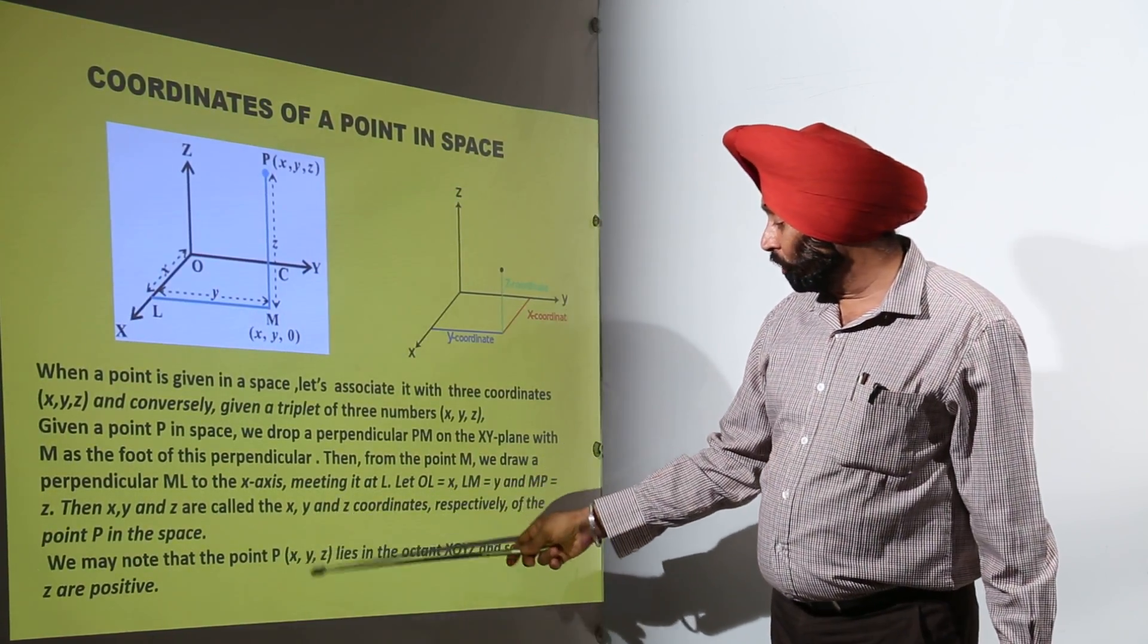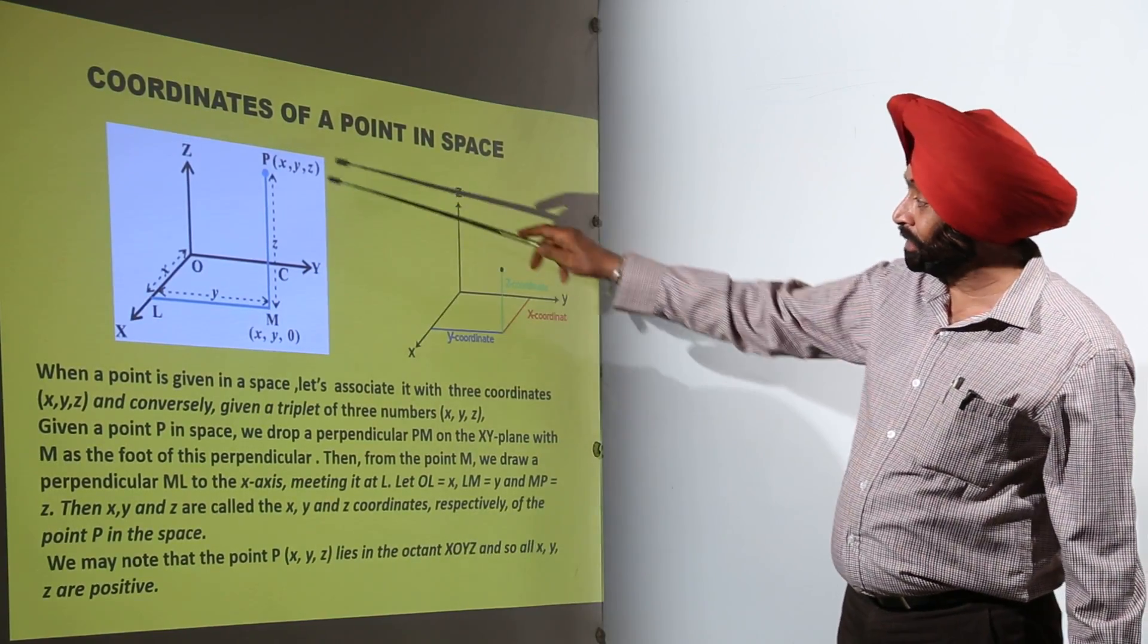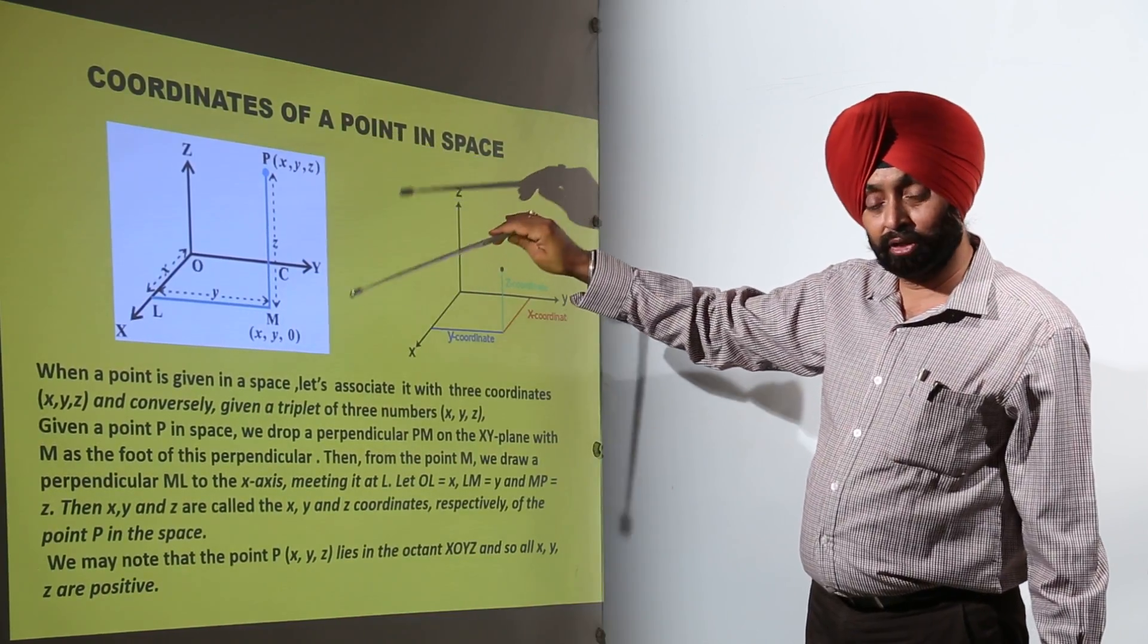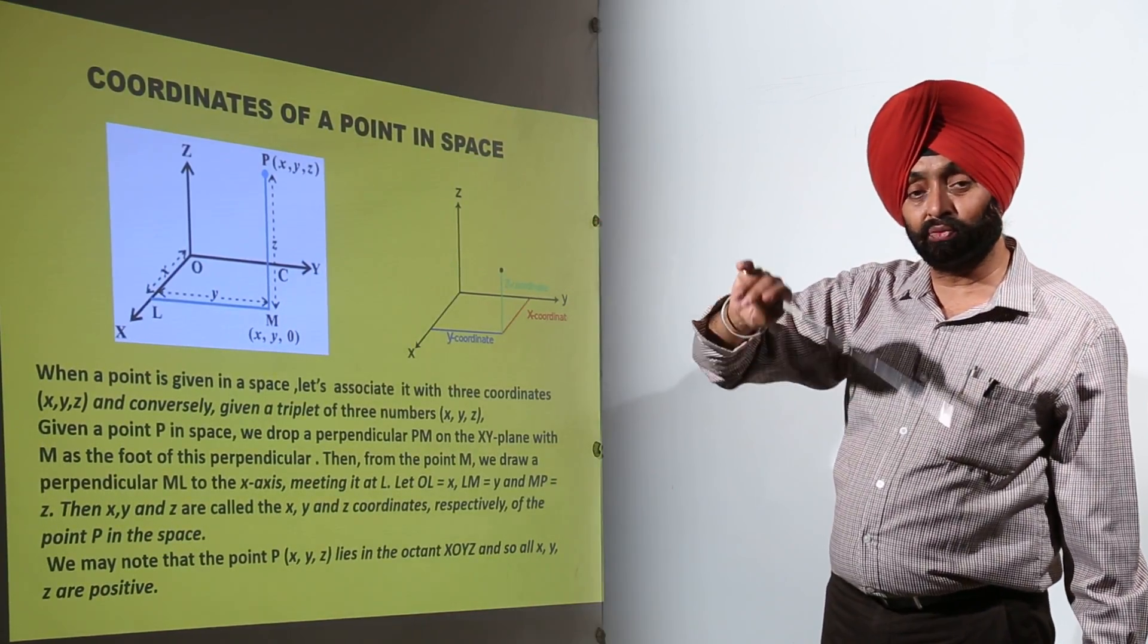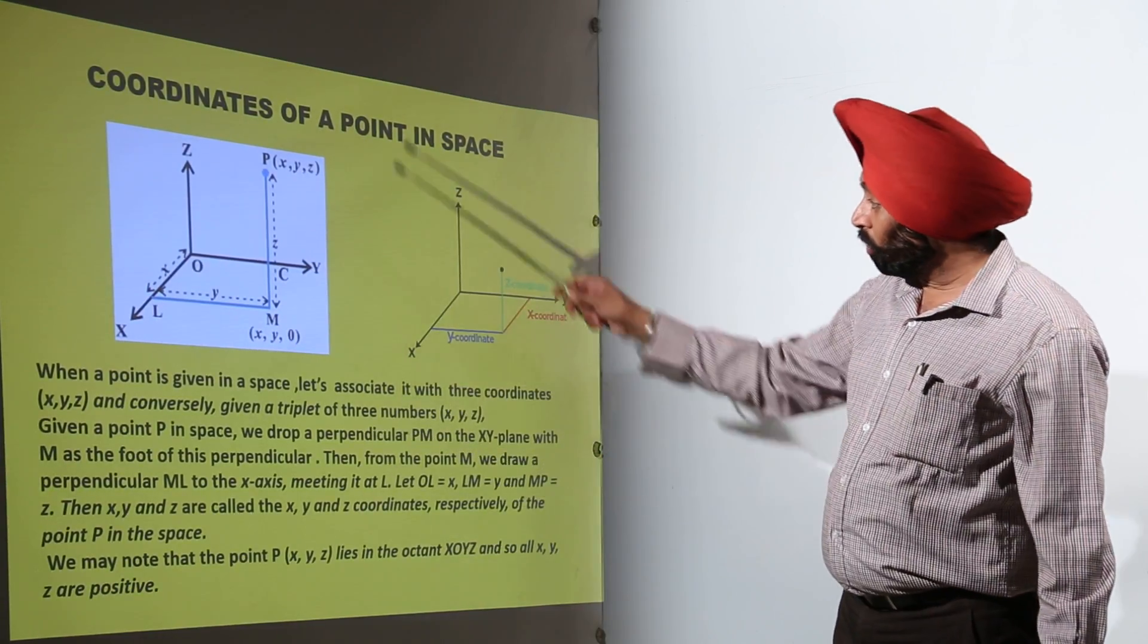We may note that the point P(X, Y, Z) lies in the octant XOYZ because all three are positive. Is it clear? In the last slide, I made you all the eight octants with X dash, Y dash, Z dash, and X, Y, and Z.